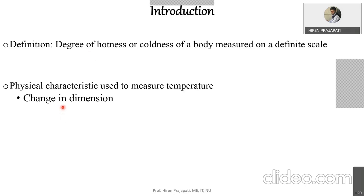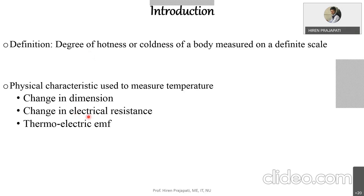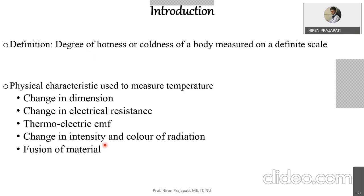The physical characteristics used are: first, change in dimension; second, change in electrical resistance; third, thermoelectric effect or EMF; fourth, change in intensity and color of radiation; and fifth, fusion of material. Because of a change in temperature, you may get a change in dimension of a metal, change in resistance, generation of EMF, variation in color, or fusion if near melting temperature.